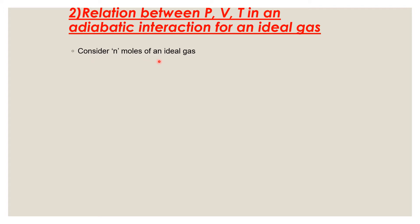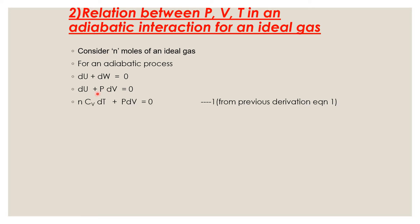Consider n moles of an ideal gas. For an adiabatic process, dQ will be zero. In the first law of thermodynamics, du plus dw is equal to zero. Substituting dw as pdV, and from the last video du is equal to n times Cv dT. From the last derivation, Cp minus Cv is equal to R, so we substitute Cv as Cp minus R. This is equation 1 and this is equation 2.